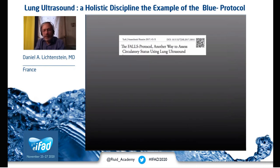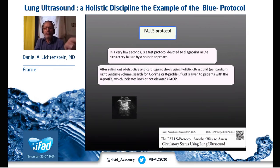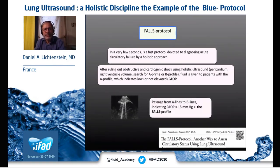The FALLS protocol is another use of lung ultrasound. It is devoted to acute circulatory failure, after ruling out obstructive and cardiogenic shock using a holistic approach — that is, the pericardium, the right ventricle volume, and the A-prime profile for pneumothorax or the B profile for pulmonary edema of cardiogenic shock. Fluid is theoretically given to patients who have the A profile, because the pulmonary artery occlusion pressure should not be elevated. When A-lines convert to B-lines, that is the sign that the patient has reached 18 mmHg.